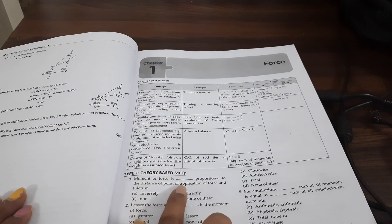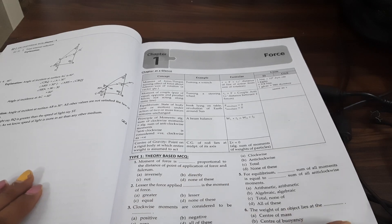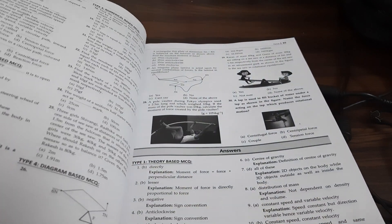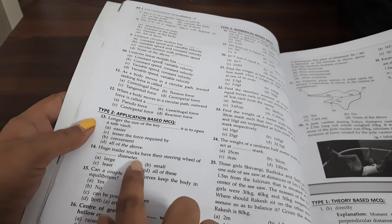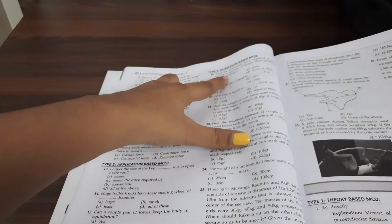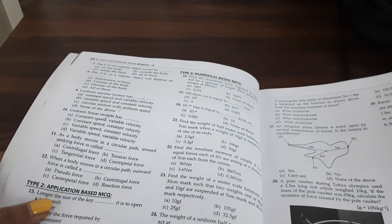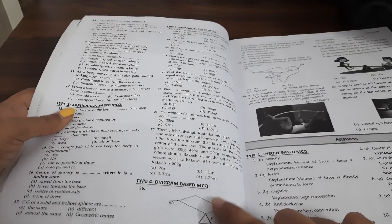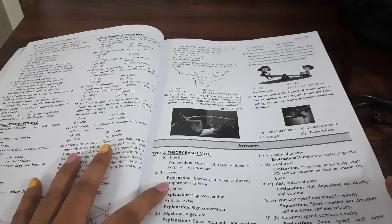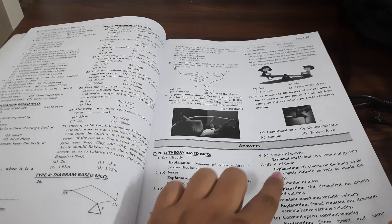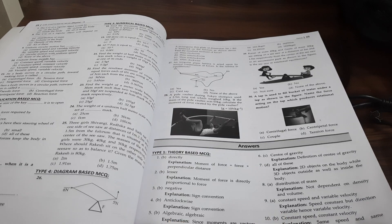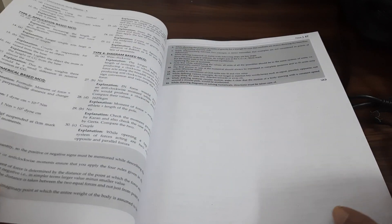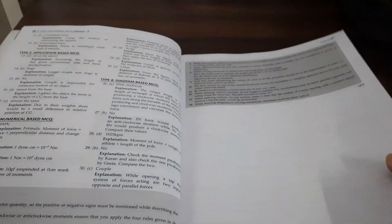Then all types of questions like Theory based MCQs are there. Then you can see Application based MCQs are there. Numerical based MCQs are there. Then there are Diagram based MCQs. These are the Diagram based MCQs. And then answers are not just given. They have explained all the answer. Even for a single line, they have explained all the answers. And then at the end, they have given word of advice.